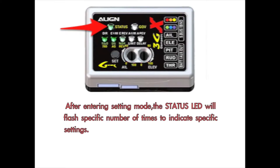You can use the status LED to determine flight mode settings. One flash is equivalent to roll rate adjustment, two flashes elevator travel limit, three flashes aileron travel limit, four flashes means swash plate dampening, and five flashes means acceleration settings.